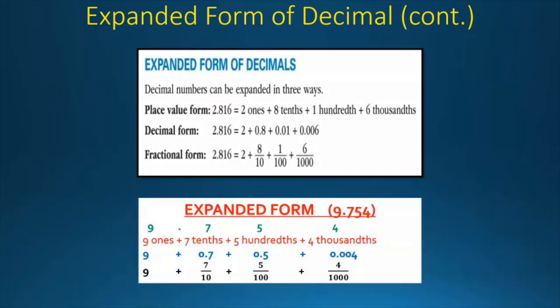Let's take the example 9.754. The place value form is 9 ones plus 7 tenths plus 5 hundredths plus 4 thousandths. The decimal form is 9 plus 0.7 plus 0.05 plus 0.004. And the fractional form is 9 plus 7 by 10 plus 5 by 100 plus 4 by 1000.